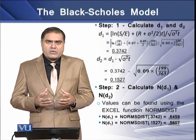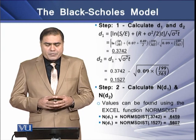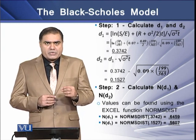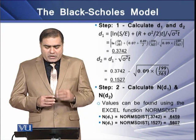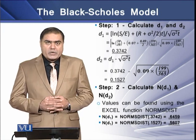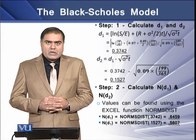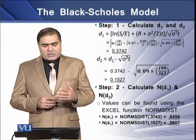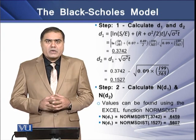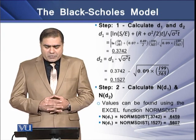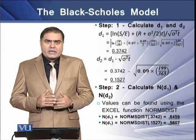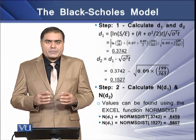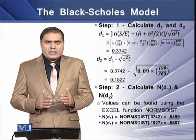Step 1: Calculate the values of D1 and D2. Putting in the values of the relevant variables, we compute D1 as 0.3742. Using this value of D1 in the formula for D2, we determine D2 to be 0.1527.